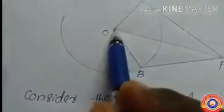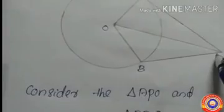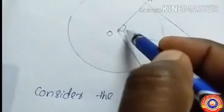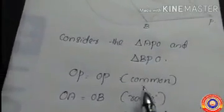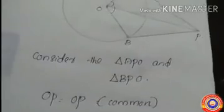In the second question, we have to prove that the line joining the center and the point where the tangents meet bisects the angle between the radii, which means OP bisects angle O. We need to prove that these two angles are equal. For that, consider triangle APO and triangle BPO. Here, OP equals OP — common side.